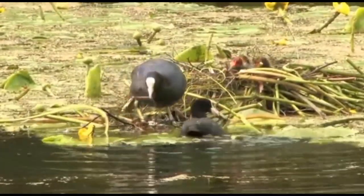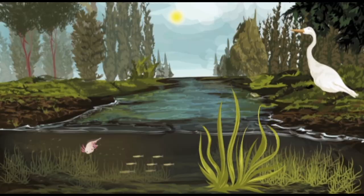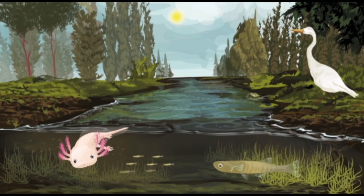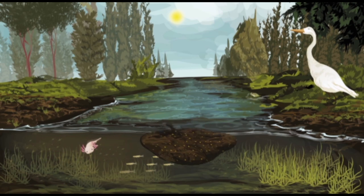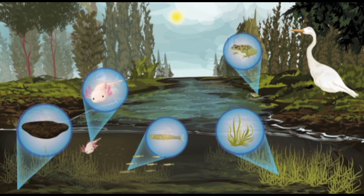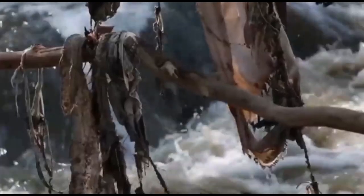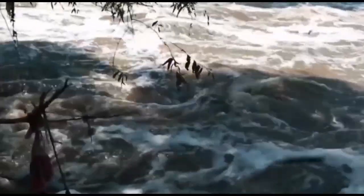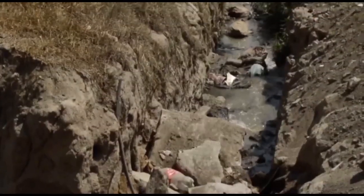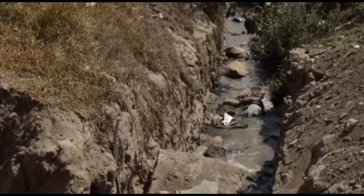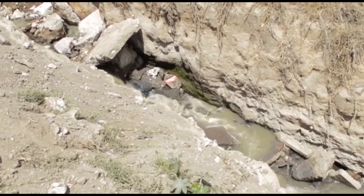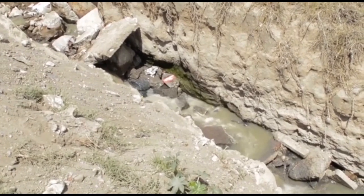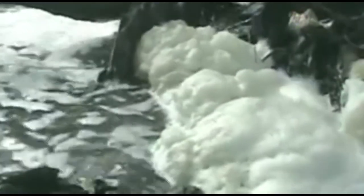En los ecosistemas de agua dulce se encuentran productores, consumidores, desintegradores, sustrato, nutrimentos, agua, luz y temperatura, interrelacionados entre sí. El tema de los ecosistemas en la actualidad ha tomado gran relevancia debido al deterioro ambiental causado por las actividades humanas que están llevando al extremo la vida del planeta, por lo que es importante informar y crear conciencia en los estudiantes.